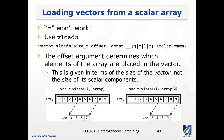This function takes two arguments. First is offset, and the second one is the pointer to the scalar array. The scalar array can be in global memory, local memory, private memory, or even constant memory.